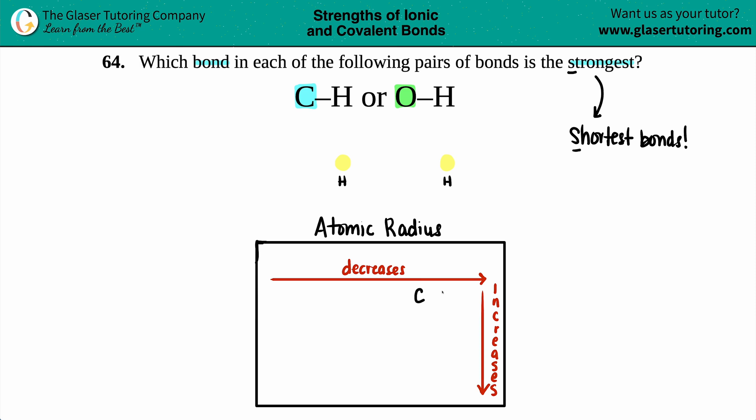Just know that as you go from left to right, your atomic radius is going to start dropping. So if carbon is this size, oxygen has to be smaller.